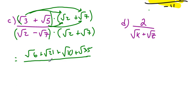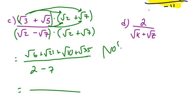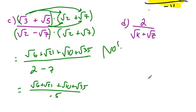Now the denominator: it's a conjugate, so the shortcut is just square the first term — radical 2 squared is 2 — minus the second term squared — radical 7 squared is 7. That gives 2 minus 7, which is negative 5. Can I combine radical 6, radical 21, radical 10, and radical 35? No — you can only combine radicals if they have the same index AND the same radicand. They all have the same index but different radicands, so we leave them as is: radical 6 plus radical 21 plus radical 10 plus radical 35, all over negative 5.